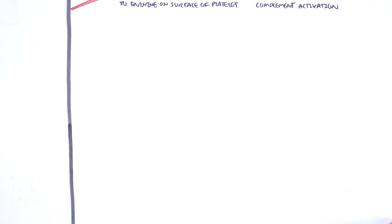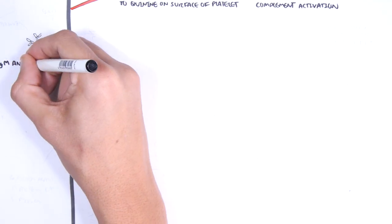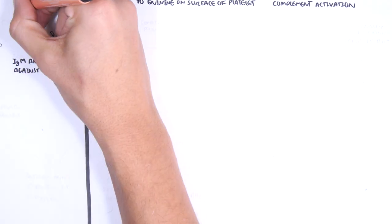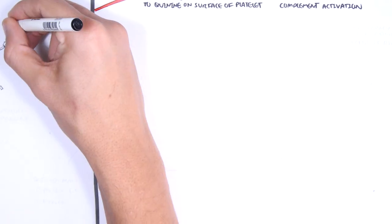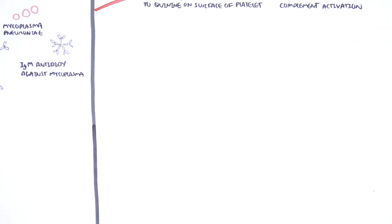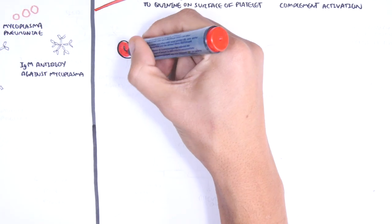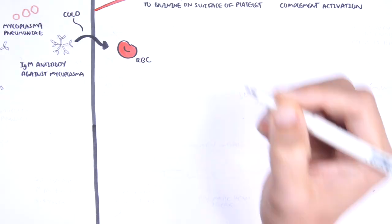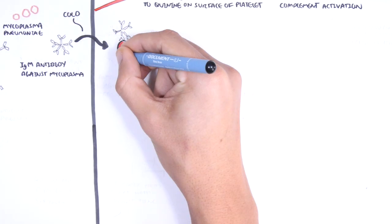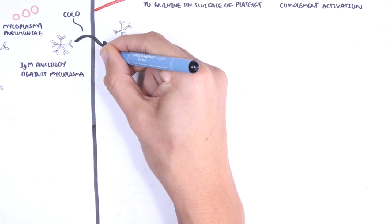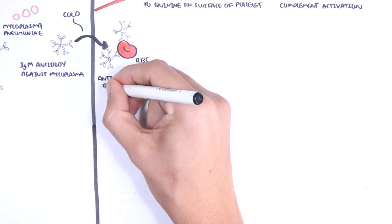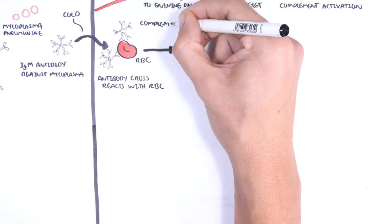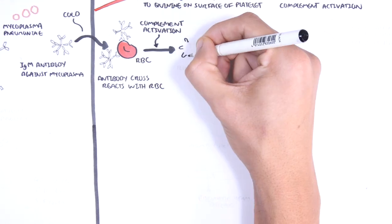IgM antibodies against mycoplasma pneumonia may also form, in an acute setting, a hypersensitivity type 2 reaction. Interestingly, in cold temperatures, these antibodies can cross-react with the person's own red blood cells, leading to complement activation and hemolysis, causing anemia.